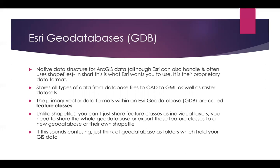For instance, you can't just jump on I-5 wherever it looks like it crosses the road — you have to find an entrance ramp. Unlike shapefiles, you can't just share individual feature classes. You need to share the whole geodatabase, or export these features to a new database, or export them as a shapefile. For most of what you do with GIS, thinking about the geodatabase as a folder that contains raster and vector feature classes is sufficient for most beginner GIS users.